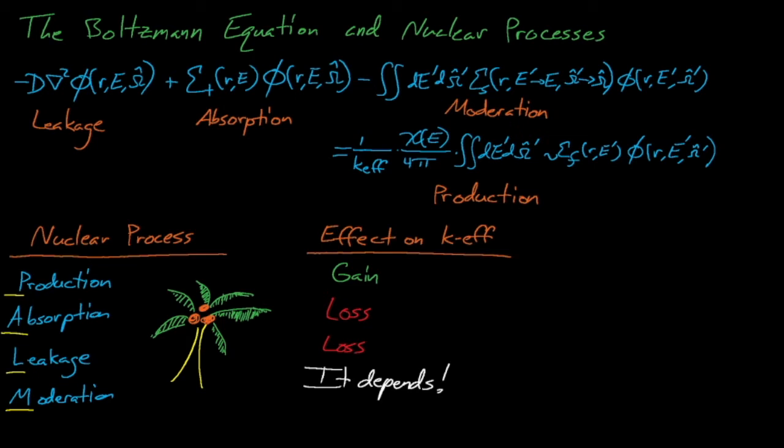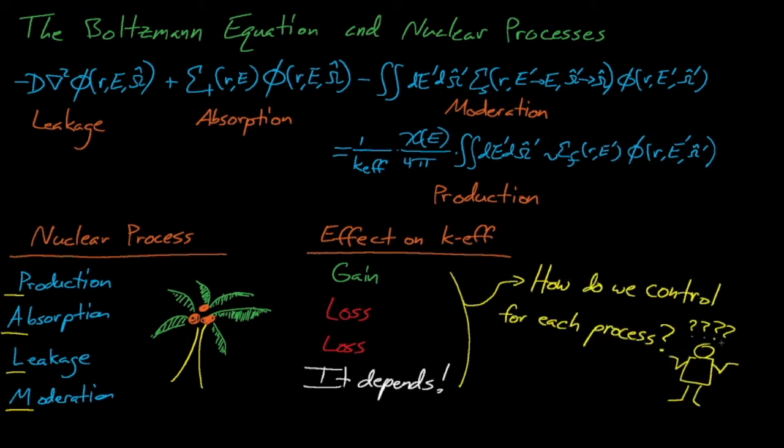So now that we understand the impact that these terms have on a system's eigenvalue, how can we control them and ensure that a system cannot possibly go supercritical? Understanding how to control the factors that affect a system's reactivity is a key goal of nuclear criticality safety and something that we will discuss at length in the coming lectures. But for this introduction, I'll briefly describe how to control for the terms in the Boltzmann transport equation.